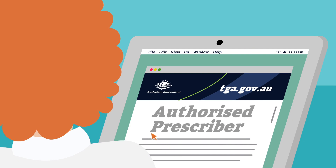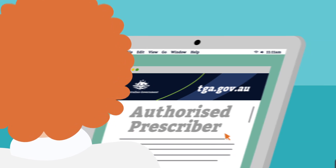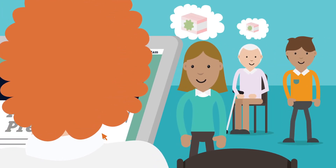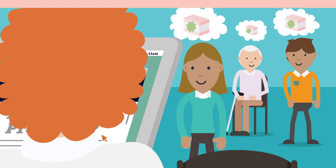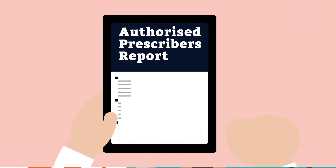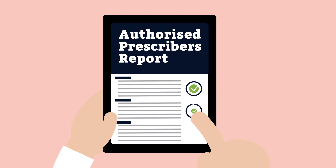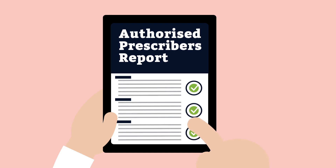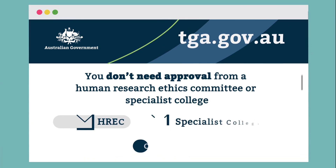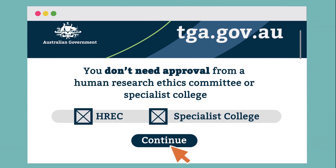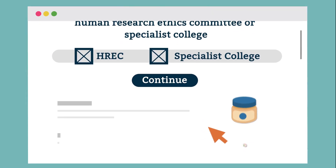Becoming an Authorised Prescriber allows medical practitioners to access a medicinal cannabis product for patients with a particular condition without requiring a separate approval for each patient. Instead, Authorised Prescribers must provide reports to the TGA every six months on the number of patients treated. You don't need approval from a Human Research Ethics Committee if the condition has been included in the list of medicines with an established history of use in Australia, which is determined by the TGA.